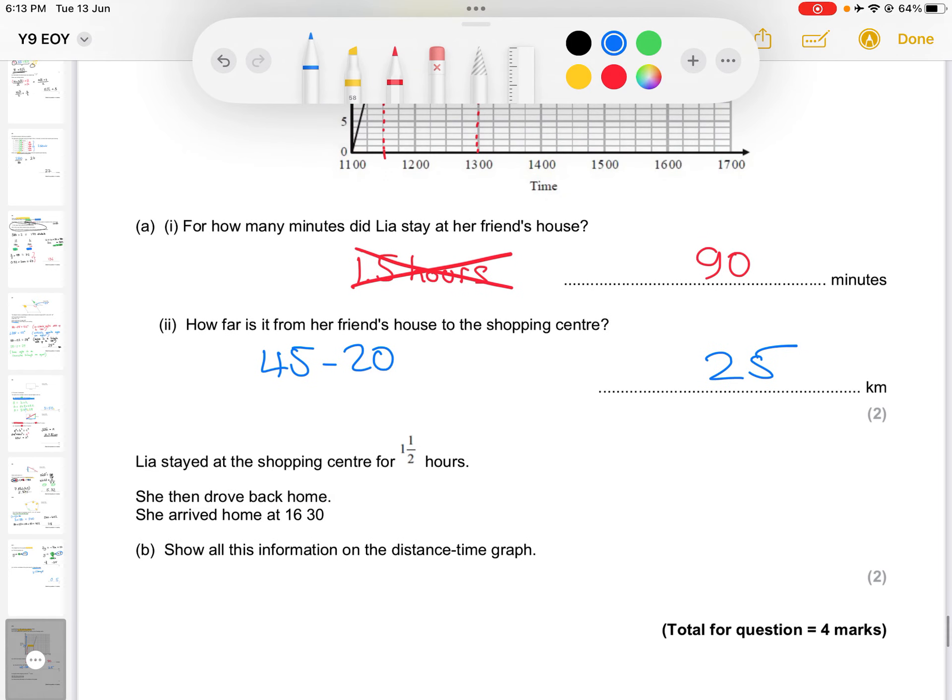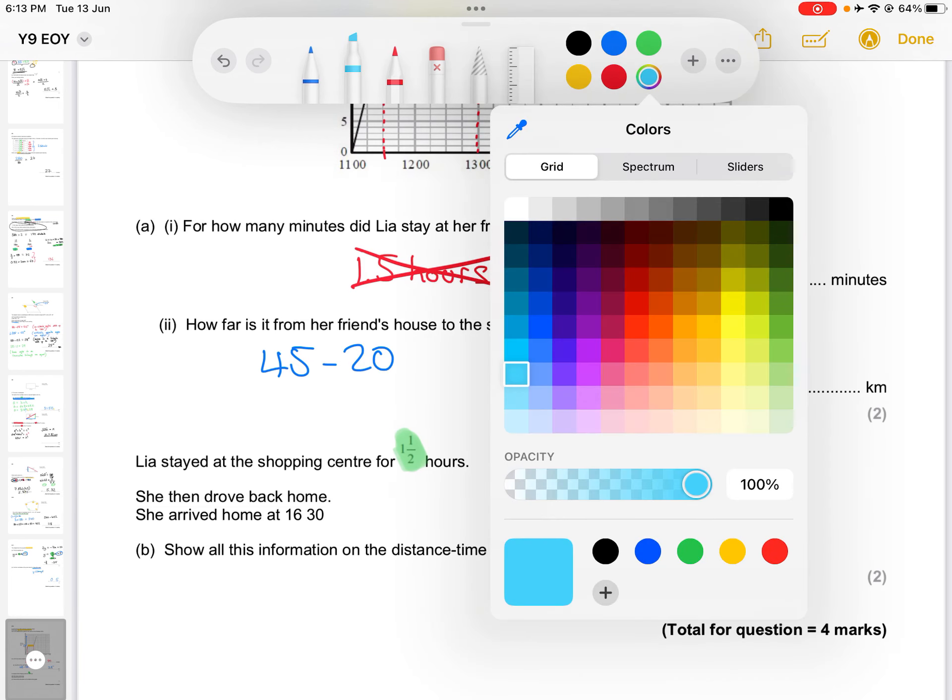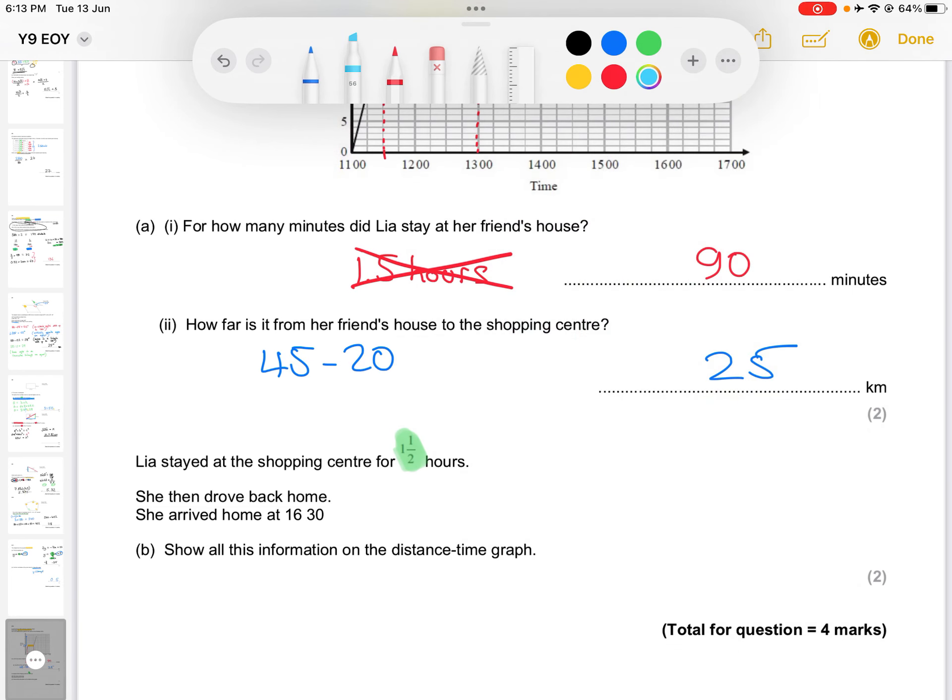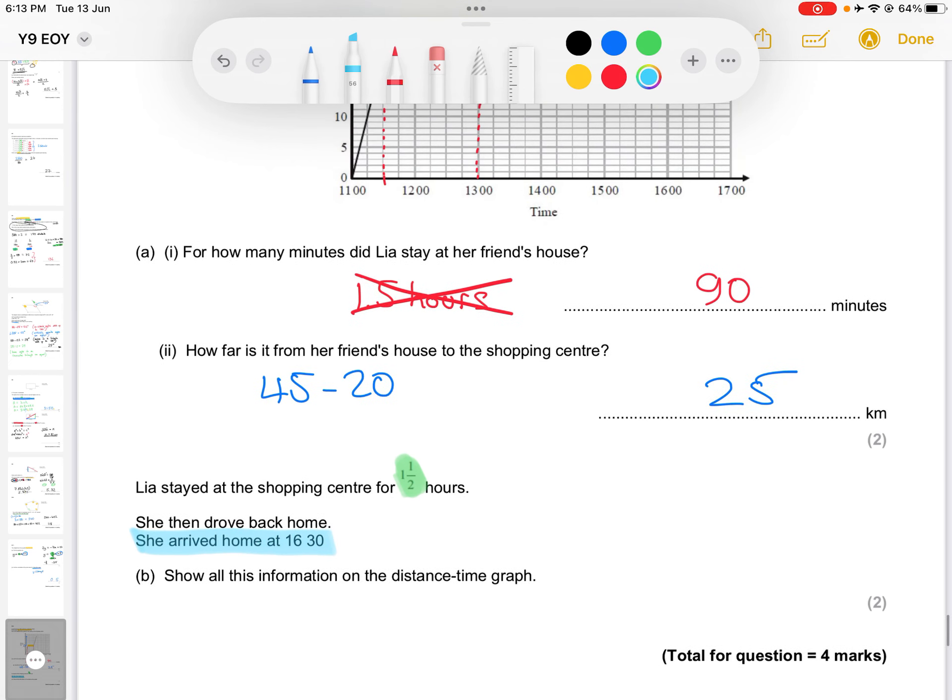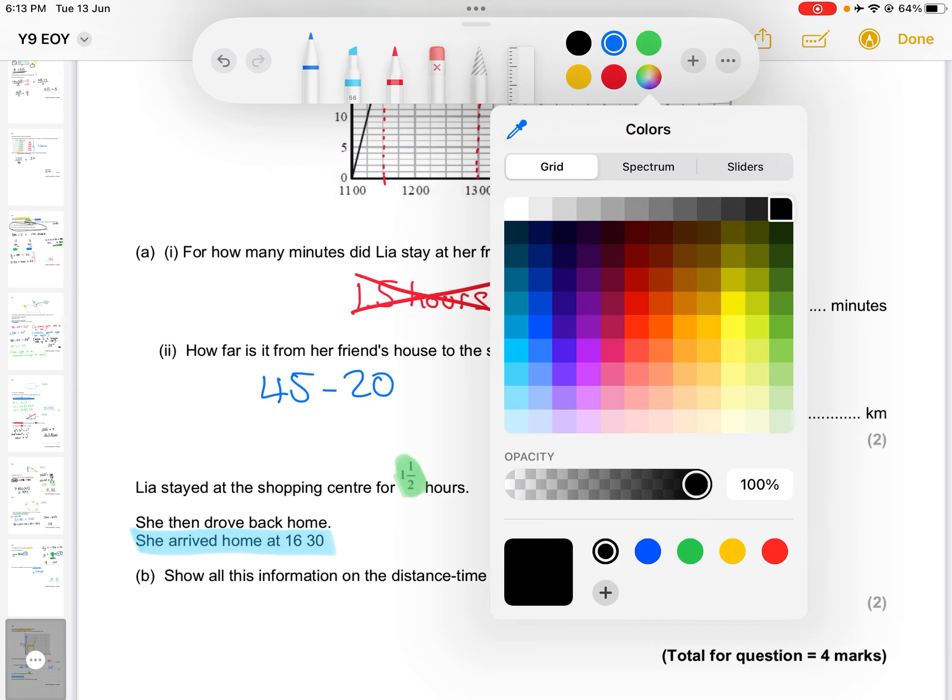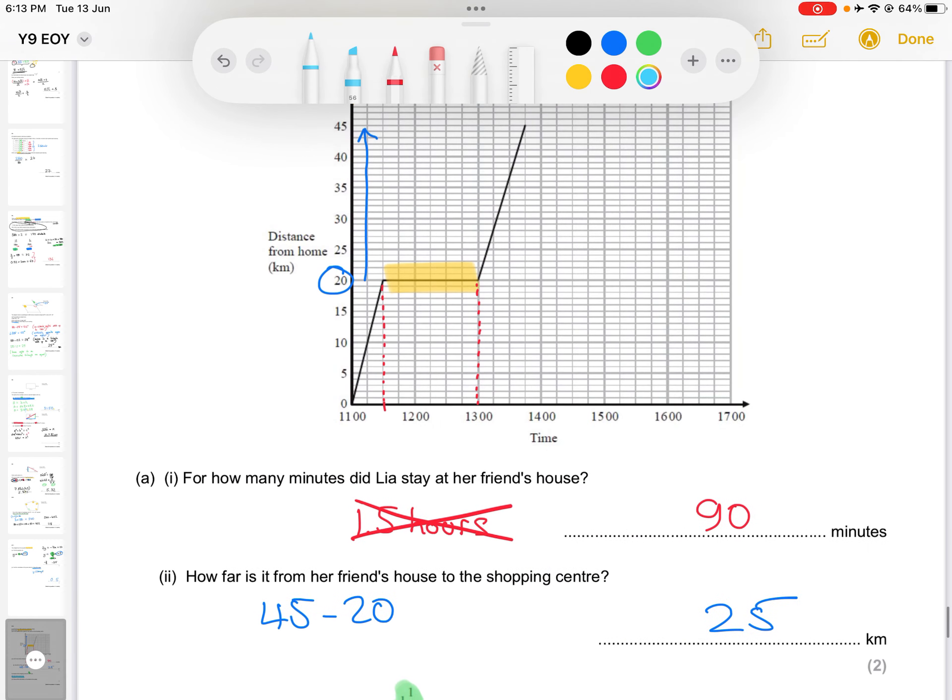We're told that Leah stayed at the shopping center for a total of 1.5 hours. We are then told that she drove home and she arrived at home at 4:30pm, at 16:30pm. So on our picture, 16:30pm is going to be here. She arrives back home because home is where she started, on the x-axis or on the t-axis technically. So we have this point here that we're going to end up drawing a line to later.